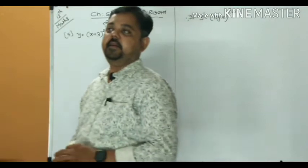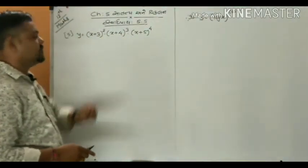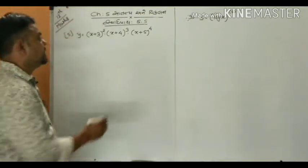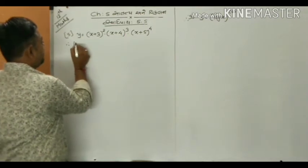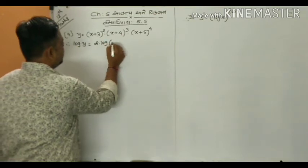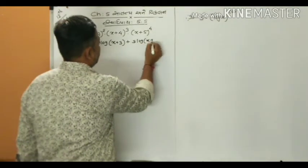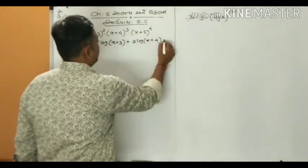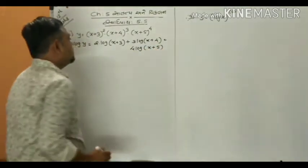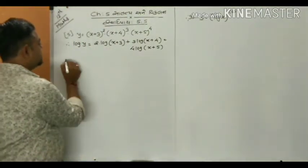Next, example number 5: y = (x+3)²·(x+4)³·(x+5)⁴. The first step is taking log on both sides: log y = 2·log(x+3) + 3·log(x+4) + 4·log(x+5). Applying log brings the powers in front as multipliers.